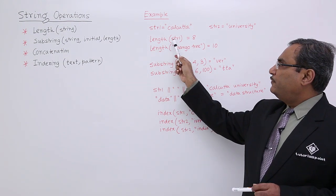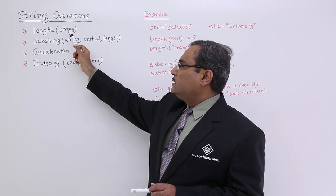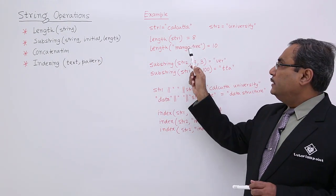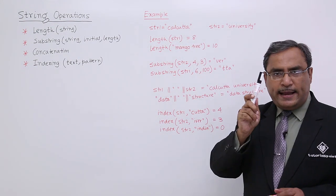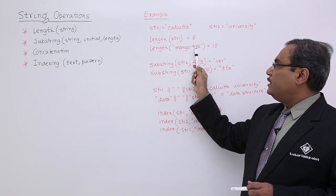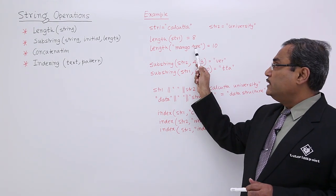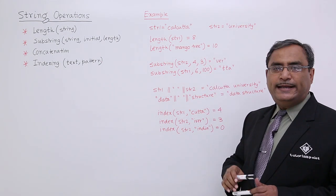Now, length of STR1 will give you 8. Length requires only one string as input argument. It is giving 8 because this particular word is having 8 characters. Length of mango tree will be 10. If you go on counting, including this blank character in between mango and tree, I shall be getting 10 here.